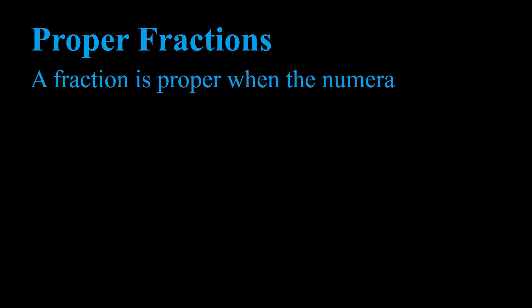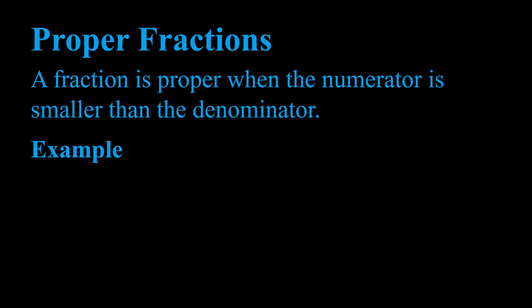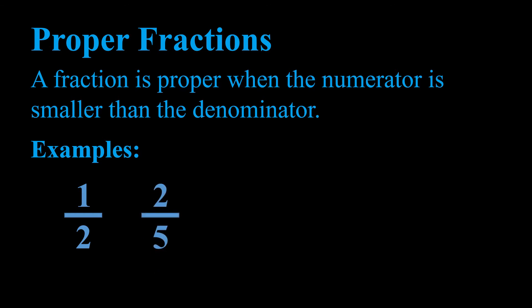A fraction is proper when the numerator is smaller than the denominator. Our first example is one half, written as one divided by two. The numerator is one and the denominator is two. Since one is smaller than two, our numerator is smaller than our denominator, which means we have a proper fraction.